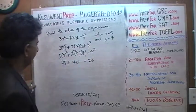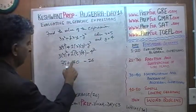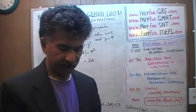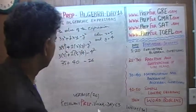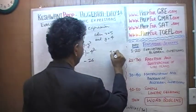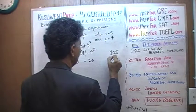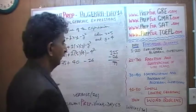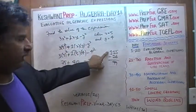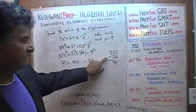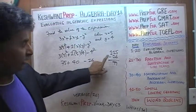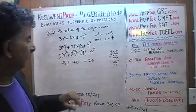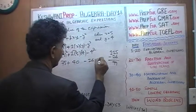So we have to figure out: 75 plus 40 is 115, minus 16. 115 minus 15 would be 100, so 115 minus 16 must be one less — it equals 99. That's our answer.